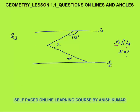Question three: L1 is parallel to L2 — this is given. One angle is 135 and the other is 40. We need to find the value of X. First method: extend that line. L1 and L2 are parallel and AB is a transversal. This angle and the 135-degree angle are interior angles on the same side of the transversal, so their sum is 180 degrees, making this angle 45 degrees.